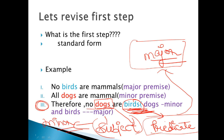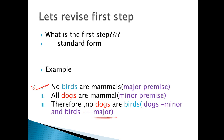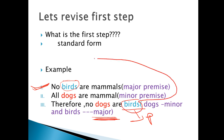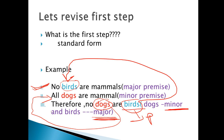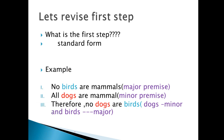Rule कहता है कि जो आपका major term होता है — यानी birds — वो पहली statement में आता है. जो conclusion का last word होता है, वो पहली statement में आना चाहिए. दूसरा rule है कि dogs, जो हमारा minor premise होता है, वो second statement में आना चाहिए. अगर ऐसा है, तो इसका मतलब है यह एक standard form है.